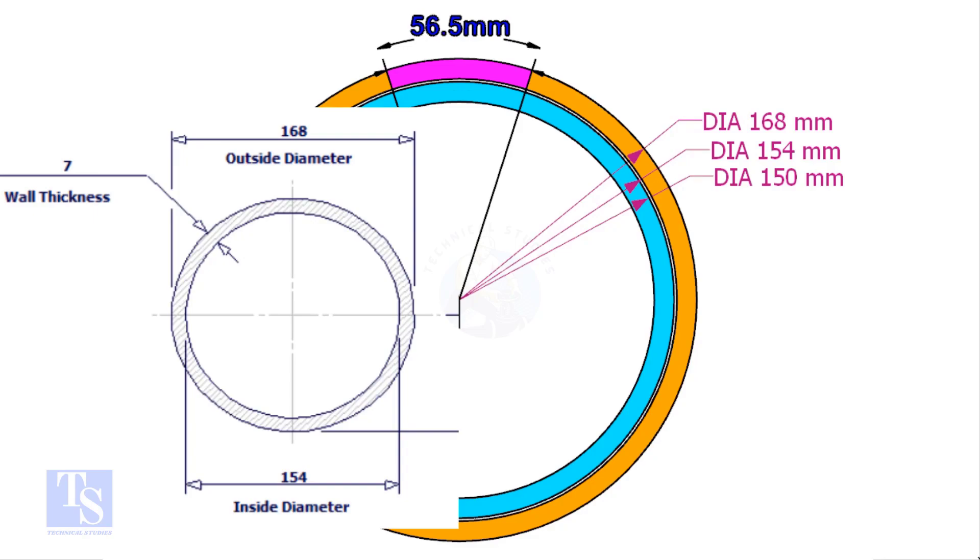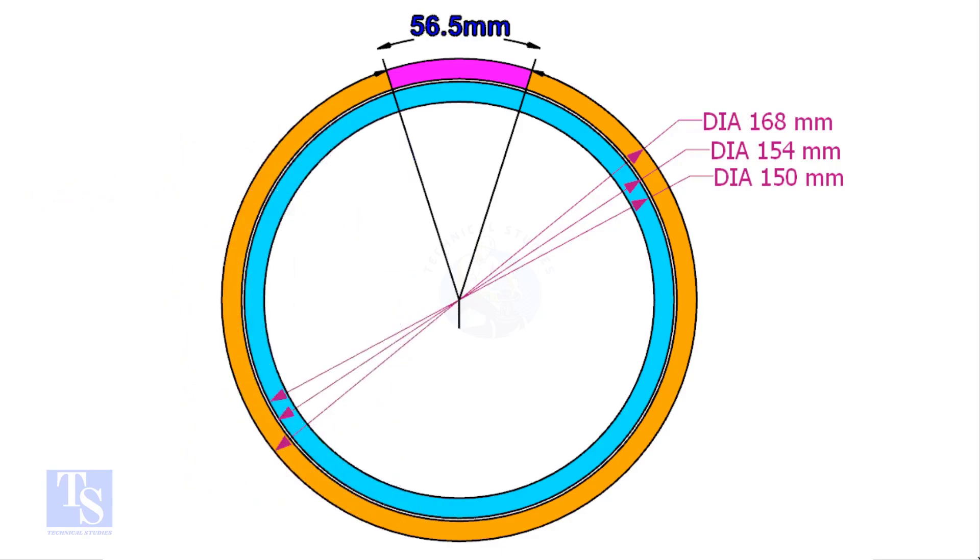The ID of a 6 inch schedule 40 pipe is 154mm. The OD of the clamp shall be 4 to 5mm less than the pipe ID. This clamp OD is 4mm smaller than the ID of the 6 inch pipe.